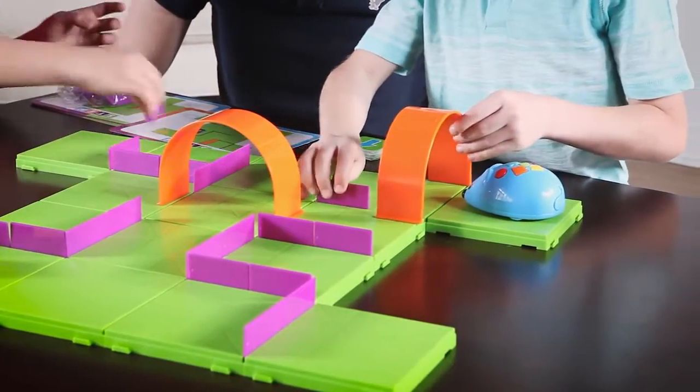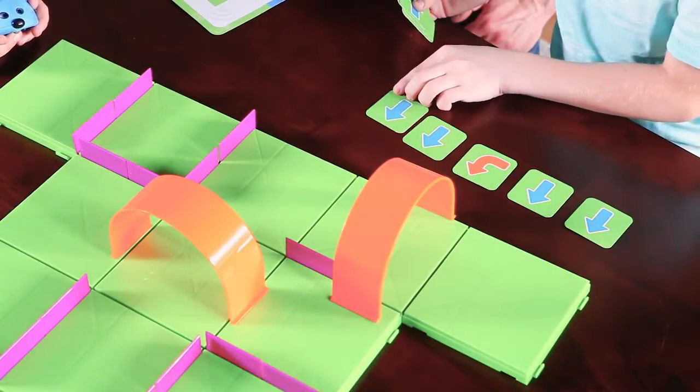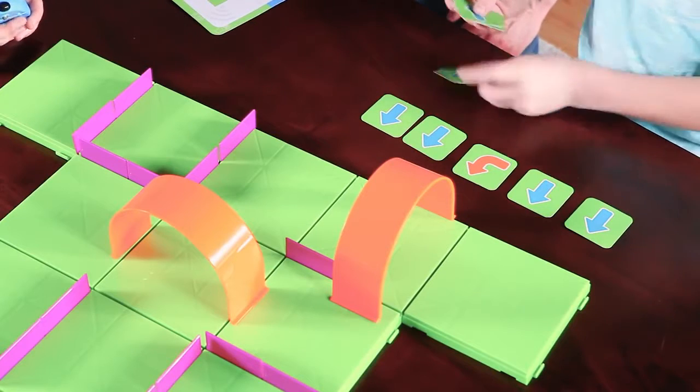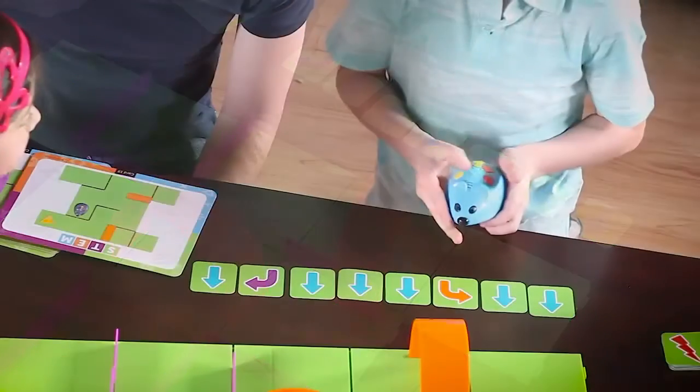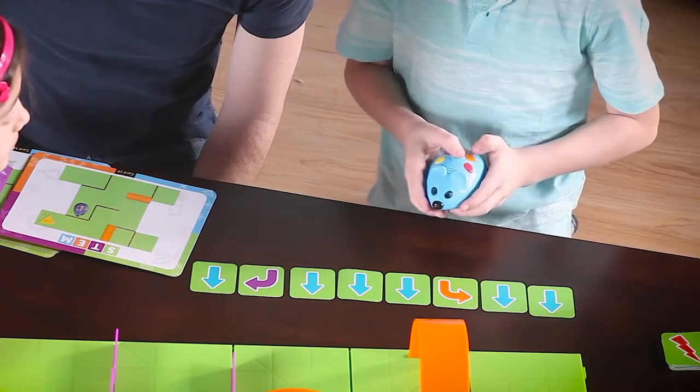Simply pick an activity card and recreate the featured maze. Next, use the coding cards to plot a step-by-step path for Colby to find the cheese. Each card features a direction or step, such as forward or reverse, to program into Colby.